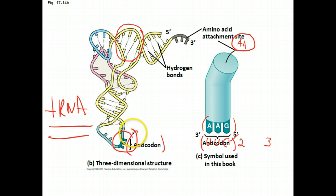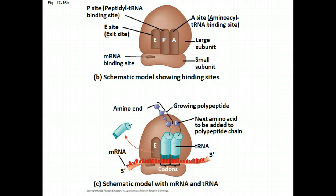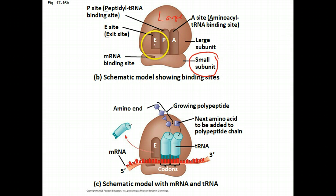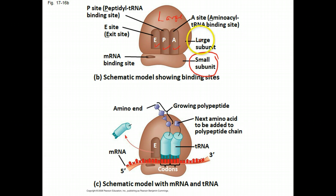Looking at the process in more detail, you can see there are two segments of a ribosome — the large subunit and the small subunit. There are different sites on the ribosome: an exit site, a P site (the peptidyl tRNA binding site, also known as the peptide site) which holds the growing strand of amino acids, and an A site where a single amino acid-carrying tRNA — called aminoacyl tRNA — binds.